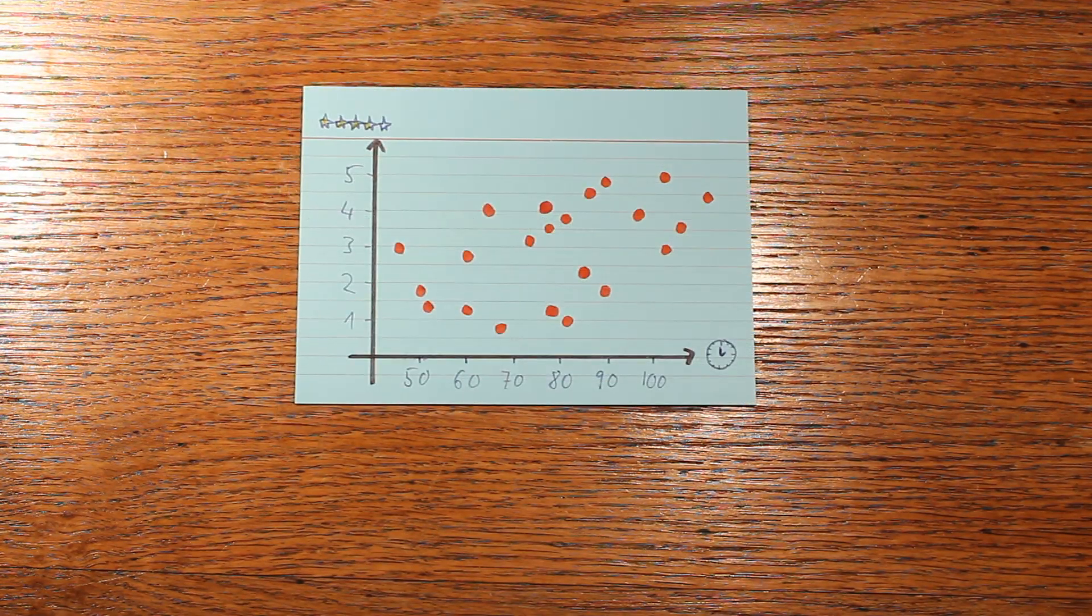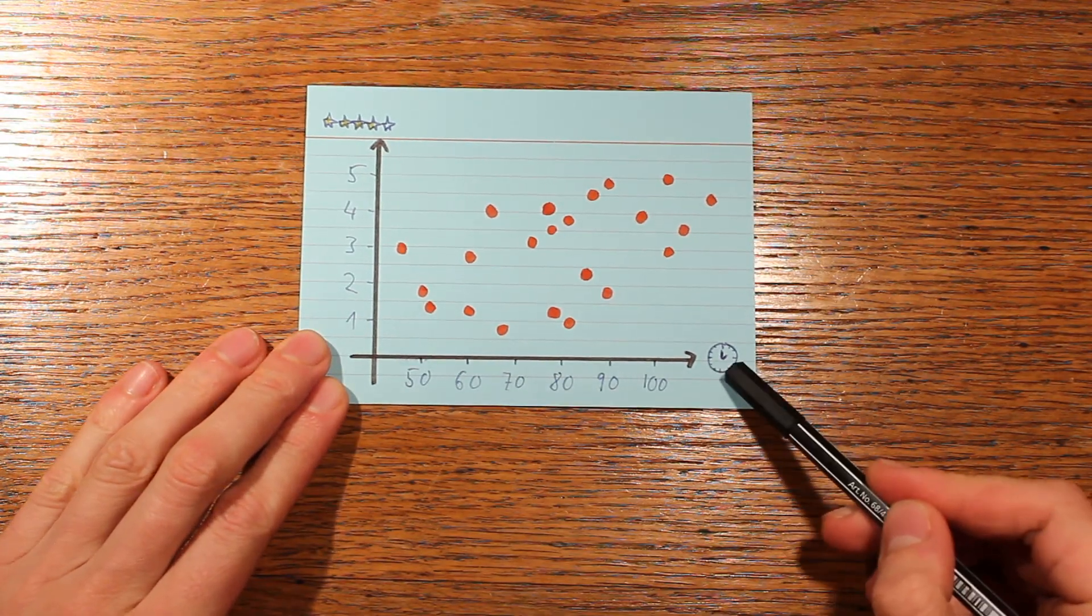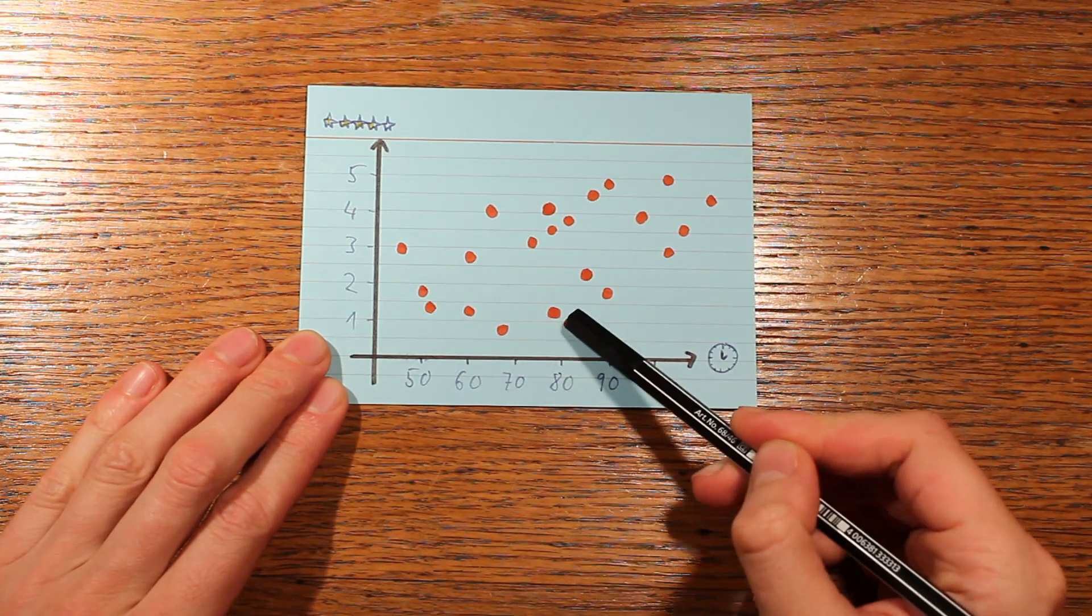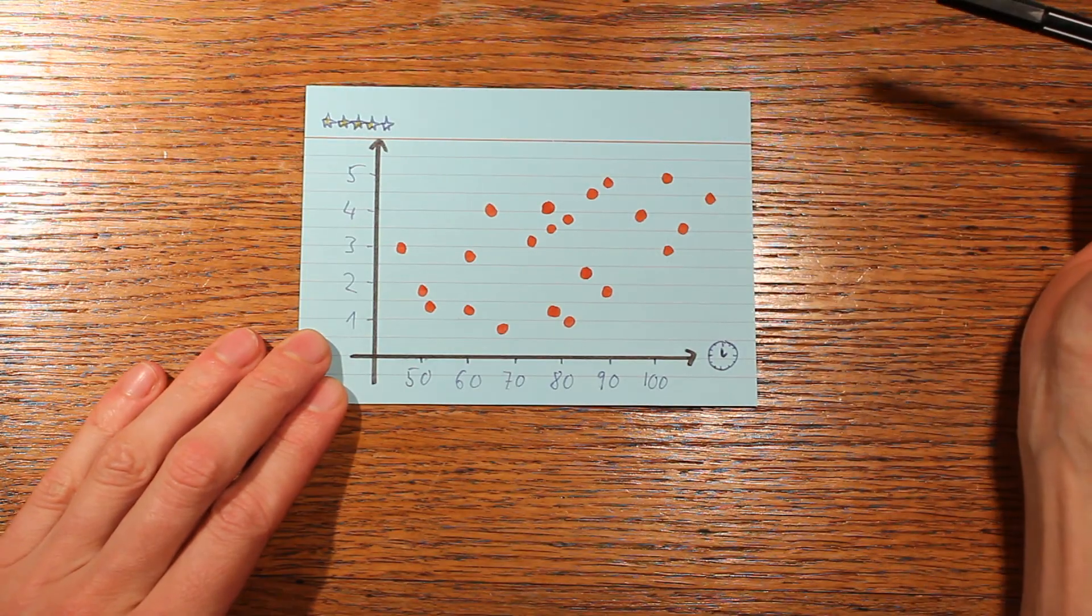Here's a scatter plot of movies, and each point corresponds to one movie. On the x-axis you can see the movie's length in minutes. This movie, for example, is 60 minutes long, this one is 80 minutes long. And on the y-axis you can see a rating of the movie, 0 to 5 stars.